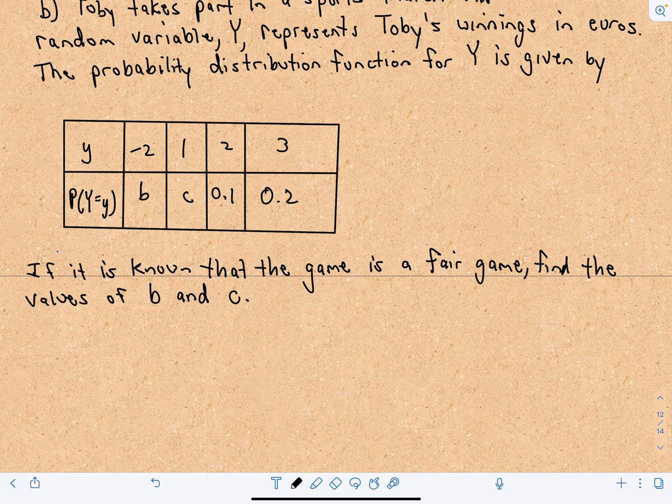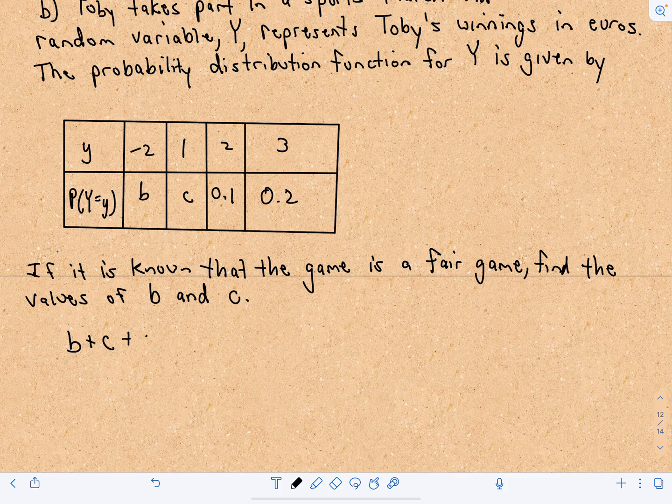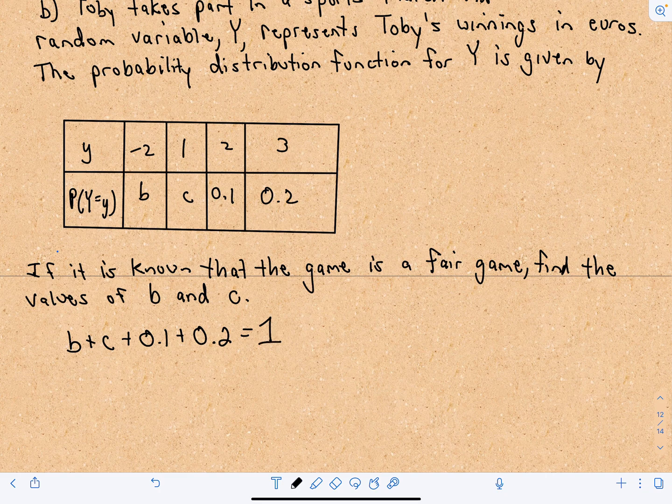We're going to have to create a system of equations in this case. The first thing we know, just like before, if we add B plus C plus 0.1 plus 0.2, if we add all those probabilities together, we know that it has to equal 1.